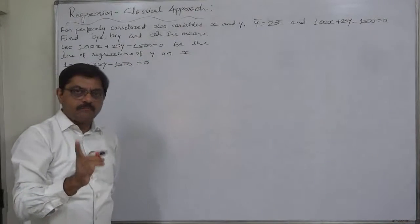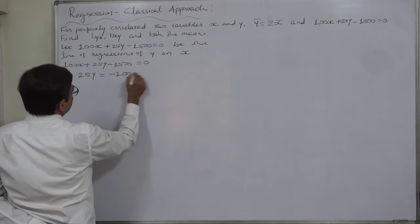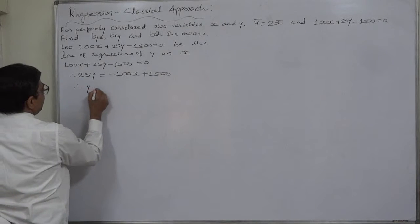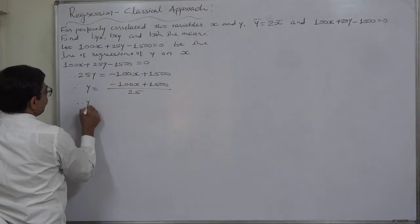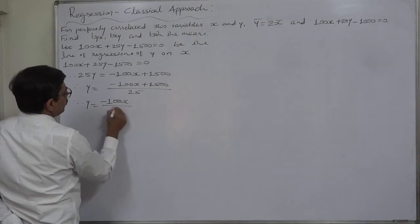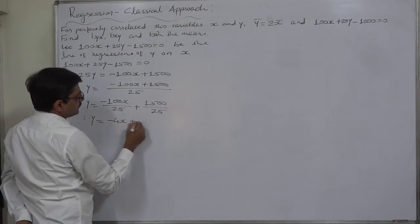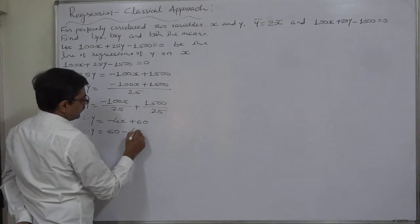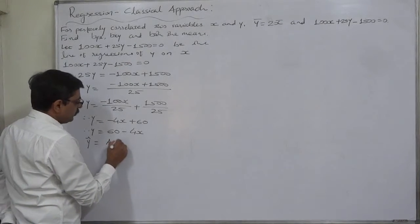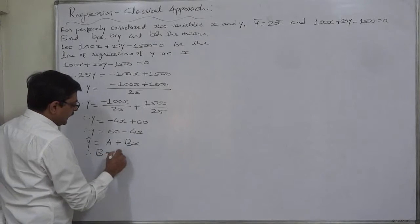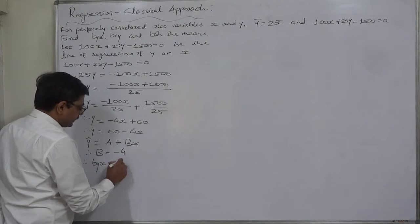If this is the line of regression of y on x, then y must be the subject of the formula. Therefore, 25y equals minus 100x plus 1500, so y equals minus 100x plus 1500 divided by 25, which gives y equals 60 minus 4x. Comparing with the standard form y = a + bx, b equals minus 4. In the line of regression of y on x, b stands for byx. Therefore, byx equals minus 4.